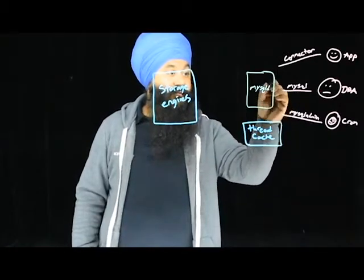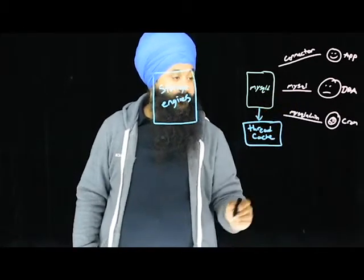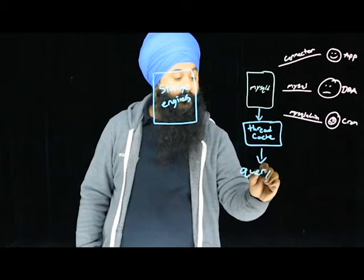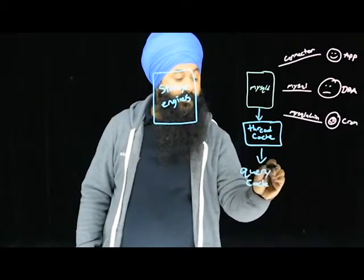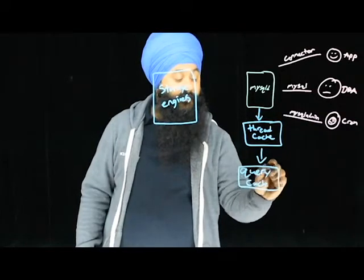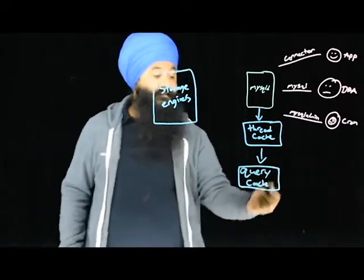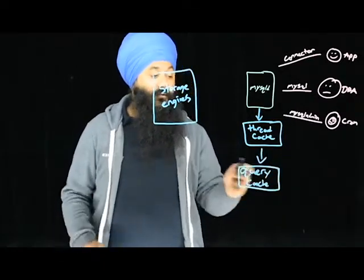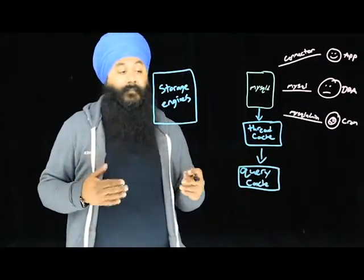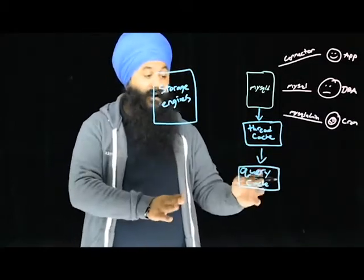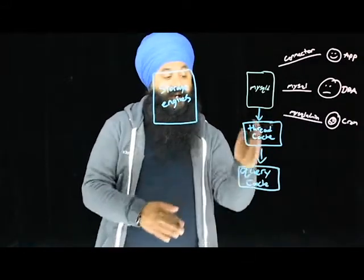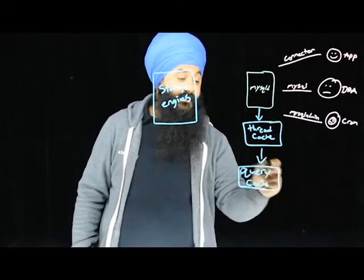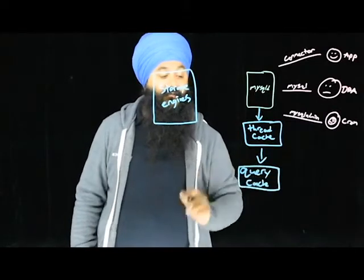These users connect through MySQLd to the thread cache. From the thread cache, the query goes to the query cache — but only if you have query cache enabled. I highly recommend disabling query cache for most workloads. The reasoning is that the query cache feature is actually single-threaded. It compares queries exactly as they are, with comments, spaces, everything. If they don't match, it ignores the cache but still has to go through it. Disable it with query cache type and query cache limit off, unless you have a good use case for it.